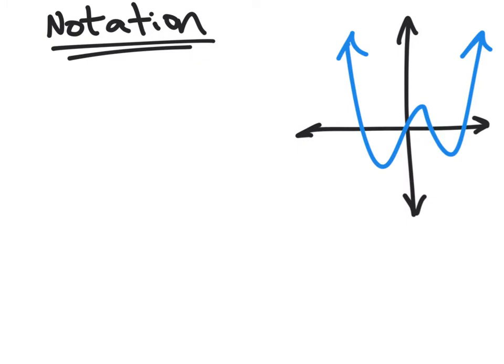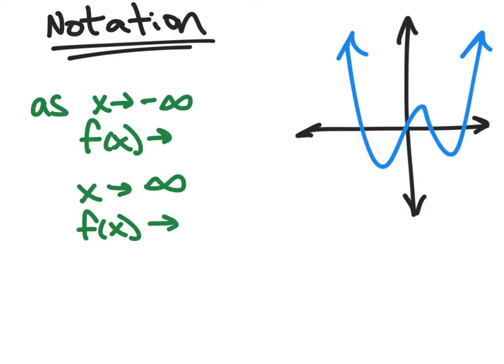There are a couple of ways that we can write the end behavior. So now we'll actually do an example. Here's a graph. The classic way of writing it is like this: as x goes to negative infinity, f(x) goes where? So as the x's go left, what's happening in f(x)? It's going off to positive infinity. And then as x goes to positive infinity, so as the domain increases, what's the range doing? It's also increasing and going to positive infinity.